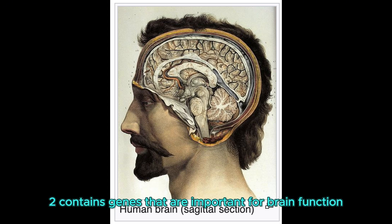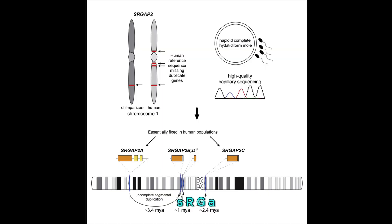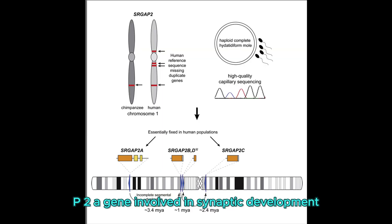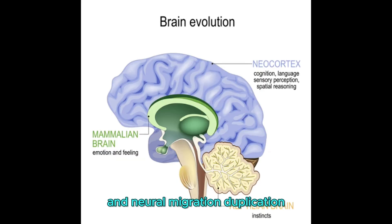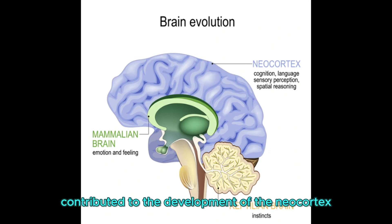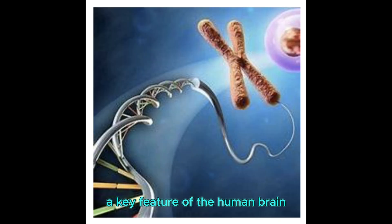Key traits and functions associated with chromosome 2 — Brain development and cognition: Chromosome 2 contains genes that are important for brain function and development. For example, SRGAP2, a gene involved in synaptic development and neuronal migration. Duplication events of this gene are thought to have contributed to the development of the neocortex, a key feature of the human brain.